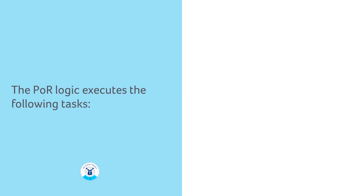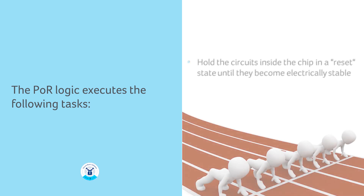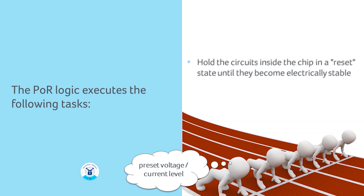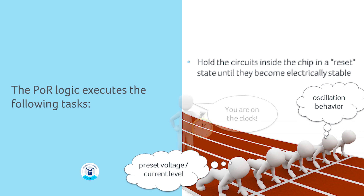Before we can run any digital software in the hardware, including bootloaders, the POR circuit logic will perform a number of tasks to ensure that the hardware platform is ready to execute software instructions. This includes holding all the circuits inside the chip in a reset state until they become electrically stable — with a preset voltage and current level for the digital and analog electronic circuits, a certain oscillation behavior for clock distribution networks, etc. This task usually requires a manufacturer-specified amount of time, and may even require external logic to work correctly in some cases.